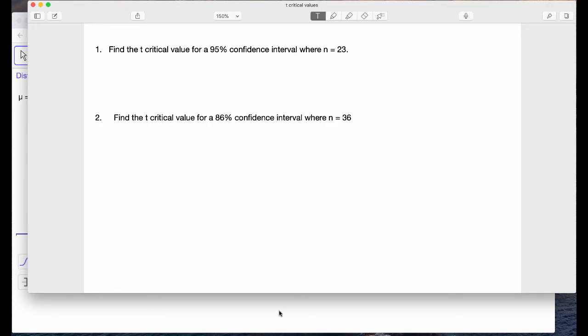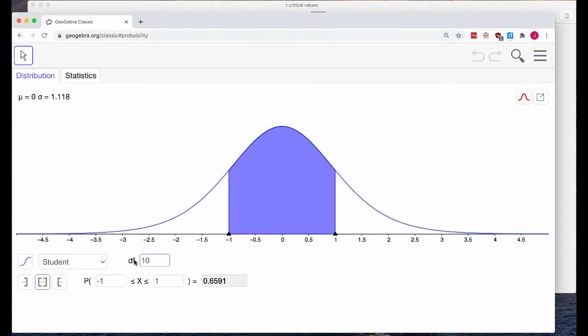So the way the T distribution works is that we need to work with degrees of freedom. Degrees of freedom is simply N minus one. So take your sample size, subtract one. So for our first example, we had 23 in our sample size, so 22 are the degrees of freedom. This is important because it changes the shape of our graph.